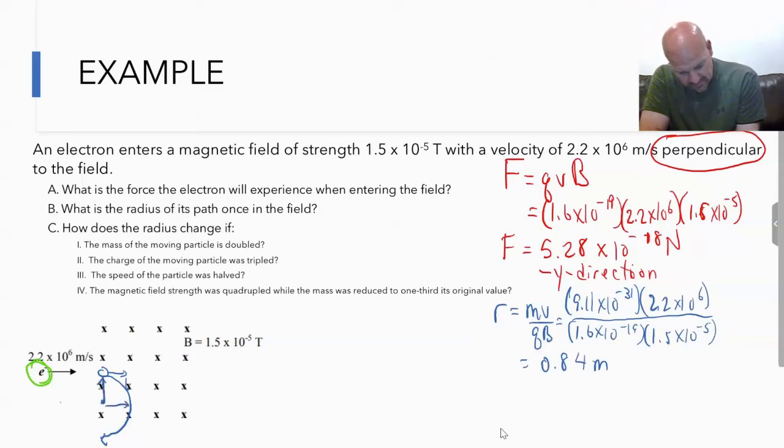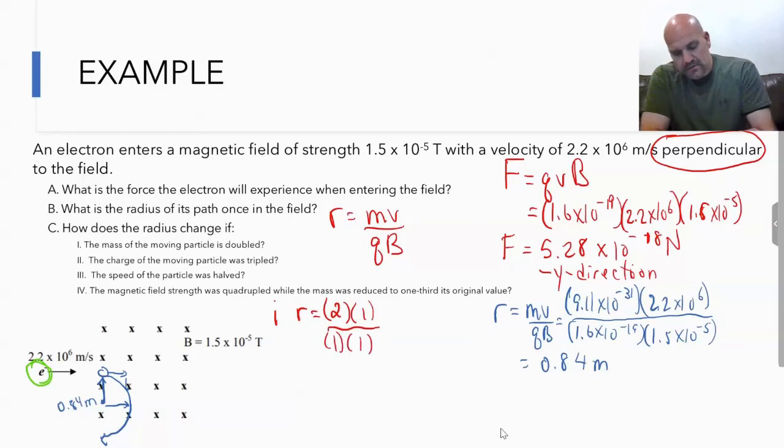Let's look at part C. We're talking about how the radius changes if we change certain aspects of the particle or the speed. Remember our general form: r equals mv over qB. Let's apply our factors of one method. For part C-i, the mass, if we double the mass, we replace where there's a one for everything that stays constant and put the factor in for that value. What would happen to my radius? It would also double.